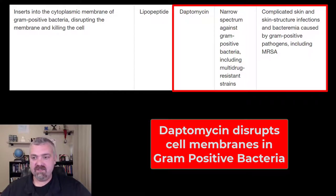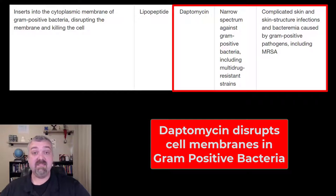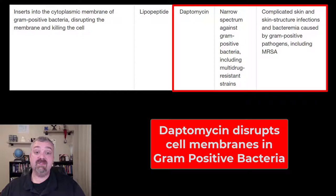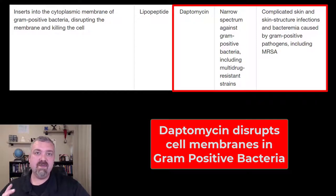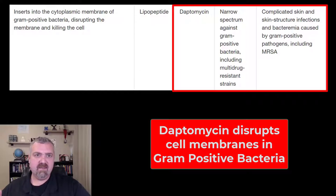It interrupts or disrupts cell membranes similar to the polymyxin antibiotics, but whereas polymyxin — like polymyxin B and polymyxin E, which is colistin — they only target gram-negative bacteria. This one's only going to target gram-positive bacteria, so it's an intravenous antibiotic. It doesn't seem to have a lot of side effects.